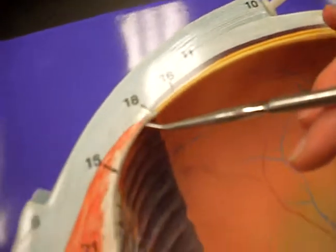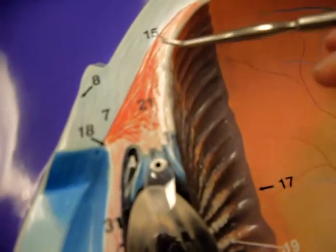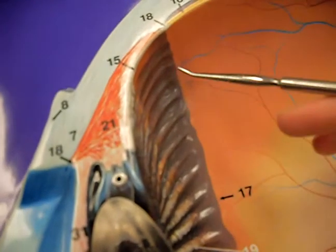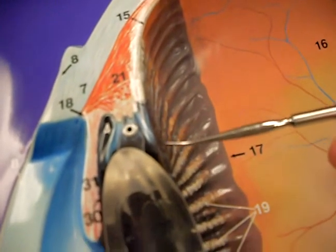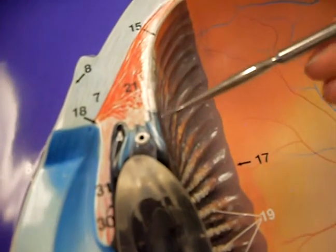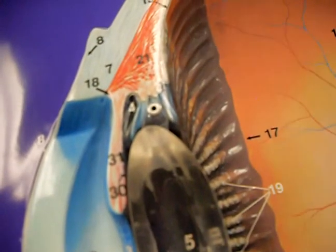Then it goes into the ciliary body, which is this part here. It also has the ciliary muscles and the ciliary processes. The ciliary processes hold the lens in place via the suspensory ligaments.